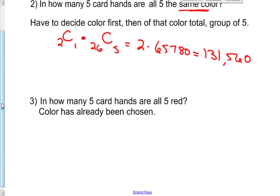In how many 5 card hands are all 5 red? Now in this particular question, the color has already been chosen. So we do not need to do this first piece where there are two colors and pick one color. The color has already been chosen for us. They have to be red cards. So I'm going to go right to the fact that I know that there are 26 red cards in my deck. And I will choose 5 of them. And that answer we saw from up above, 65,780.